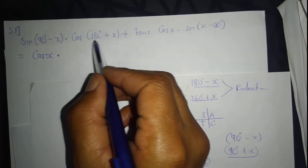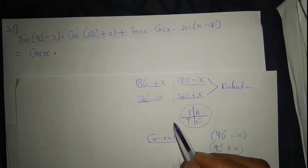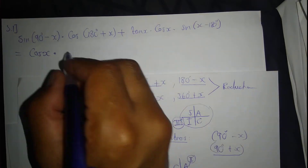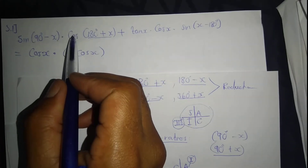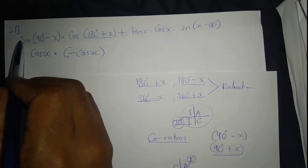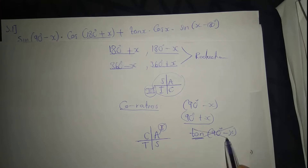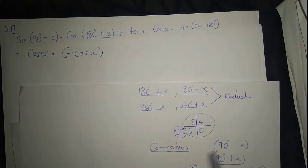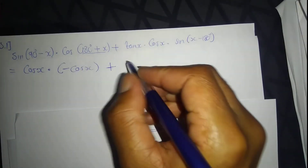For 180° plus x, it's found on the third quadrant. In the third quadrant, only tan is positive, so cos is negative. Using reduction formulas, I change the co-ratio — sign becomes cos and cos becomes sign — but we're not changing into tan because there are only two co-ratios: one for sign and one for cos.